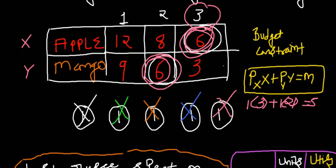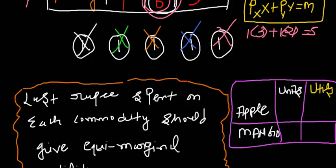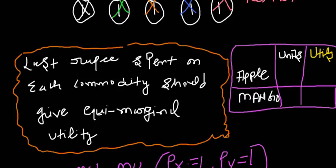Another very important point: the entire budget must be consumed. If apple and mango both gave 12 utils at the very first unit, you would not save the remaining 3 rupees. The law is about spending on two commodities such that the last rupee spent gives equi-marginal utility satisfaction. In this case, 3 units of apple and 2 units of mango give a common utility of 6, satisfying the law of equi-marginal utility.